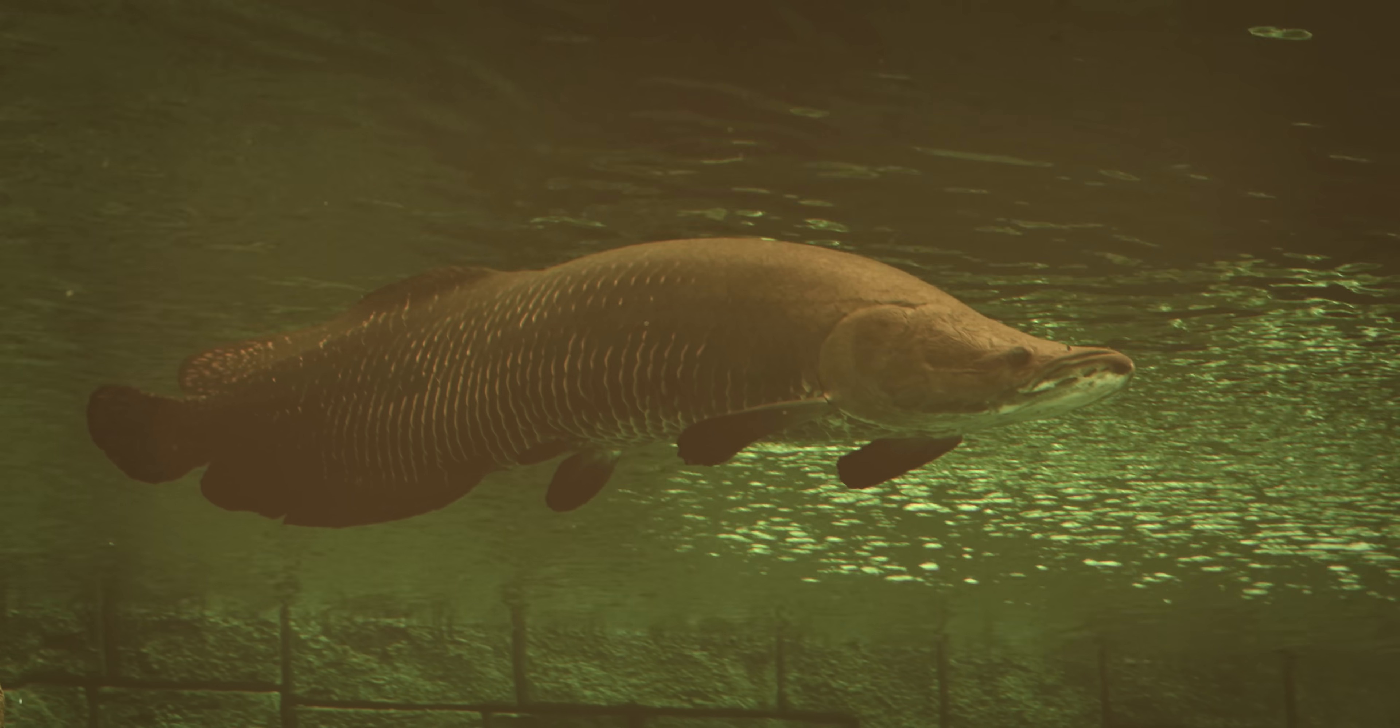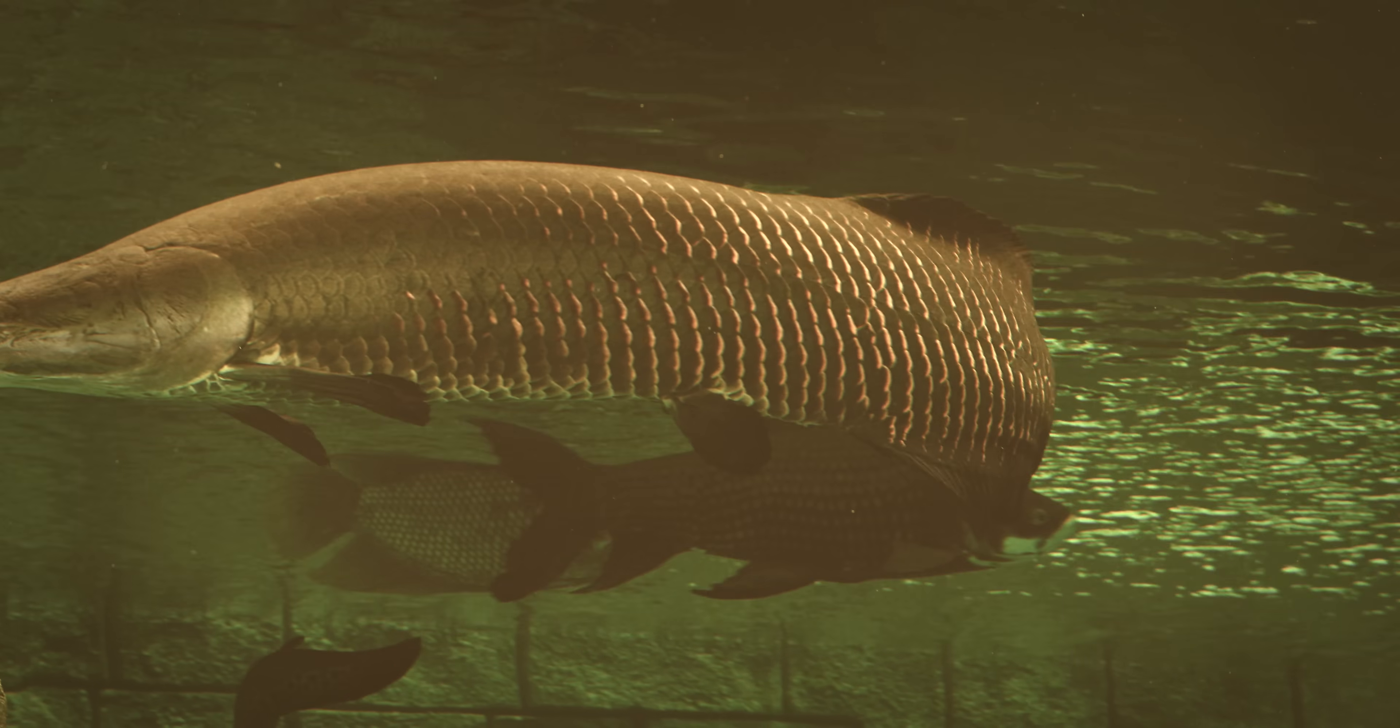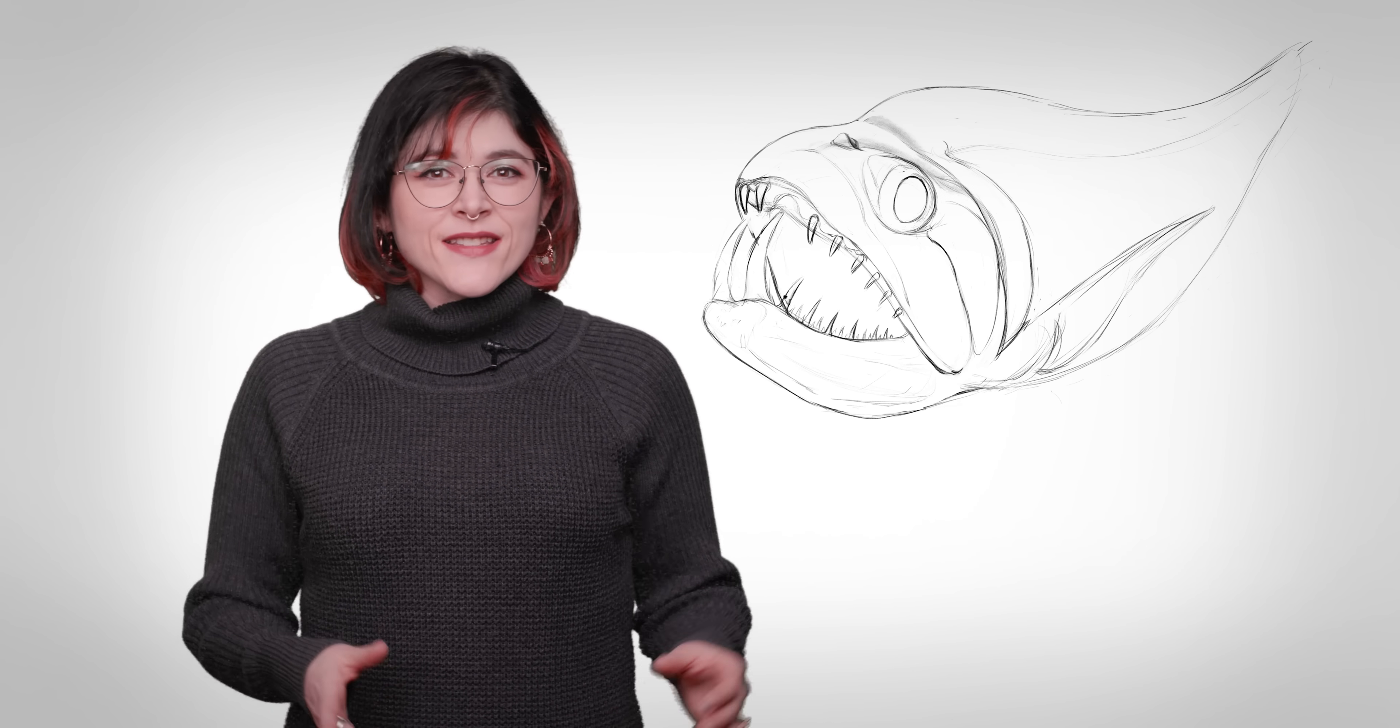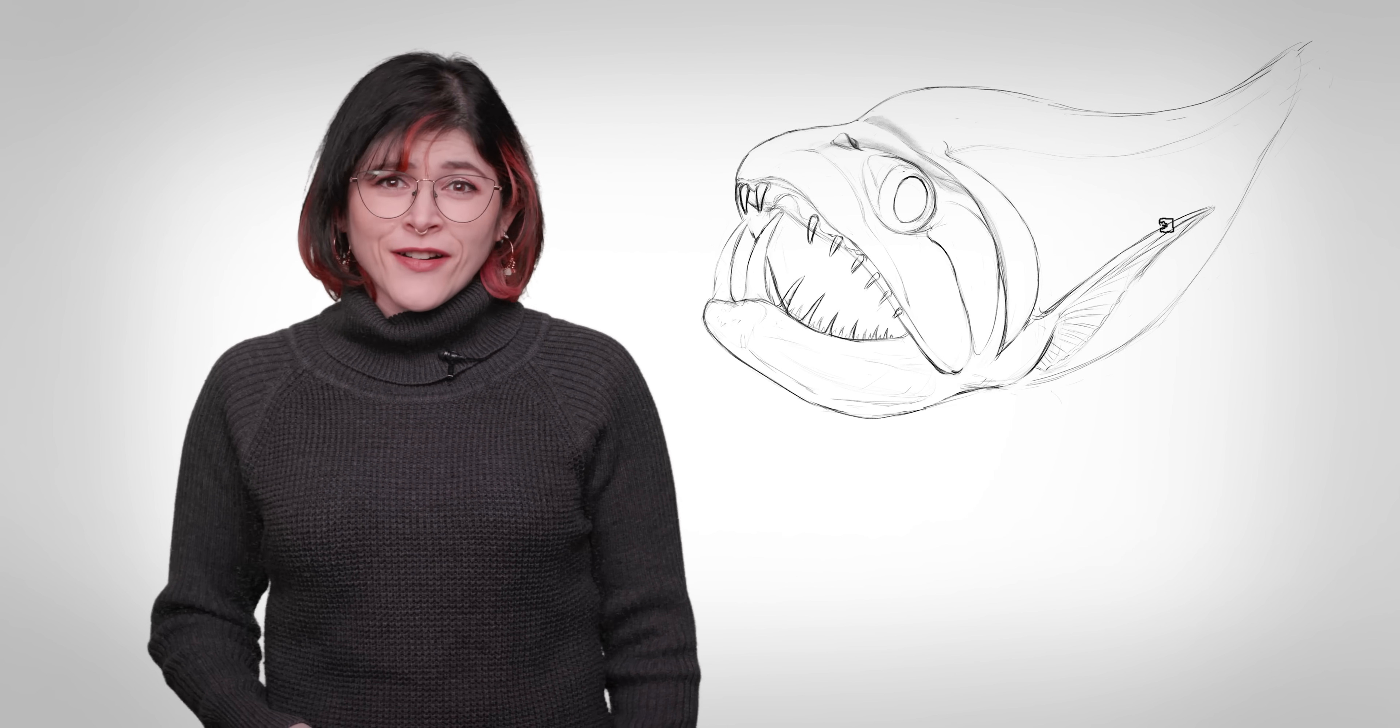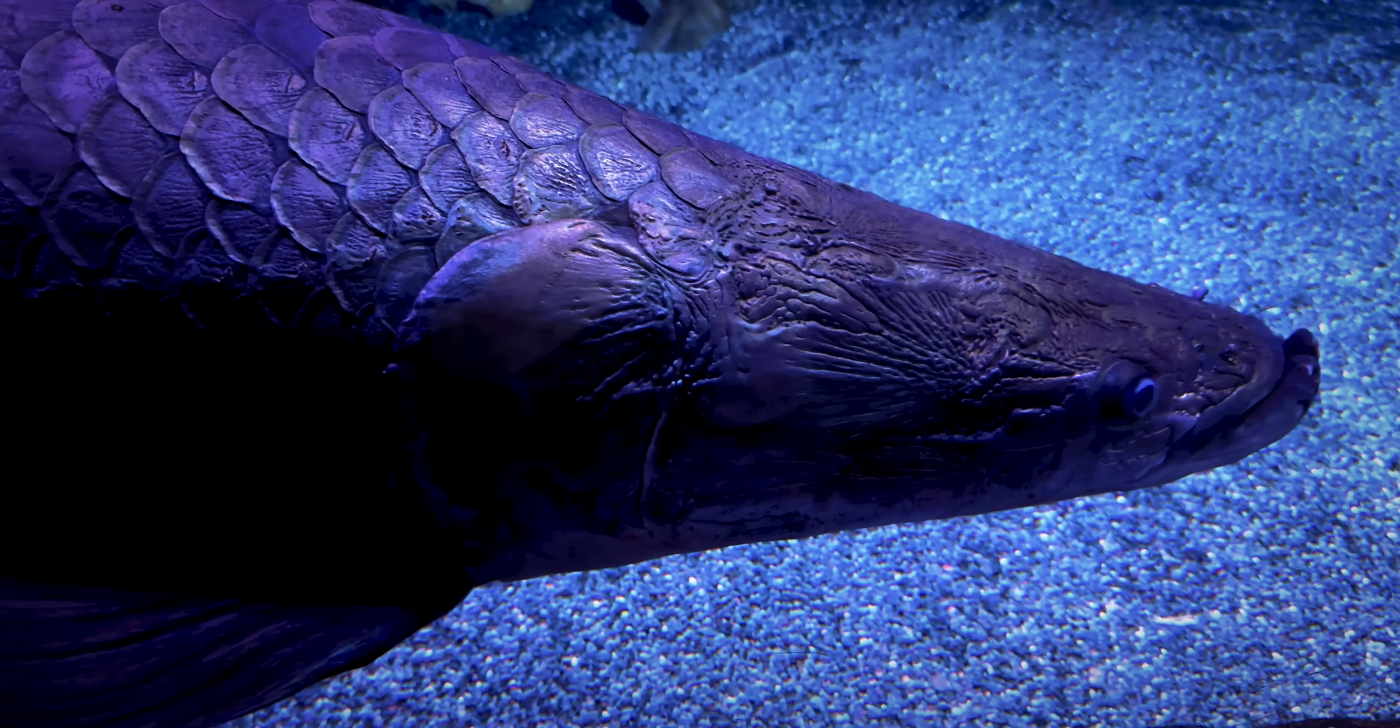This is the arapaima, or piraruku. A healthy adult can be over two meters long, with some exceptional cases of three meter long monsters. To hunt, they just need to quickly open their mouth, creating a vacuum and suctioning their prey into their mouths. Some reports even say these jungle leviathans leap from the water to snatch birds mid-air. Come on, that's just a cartoonishly terrifying predator. It's like the mosasaur who jumps up and snatches a pterosaur in Jurassic World. It's crazy.